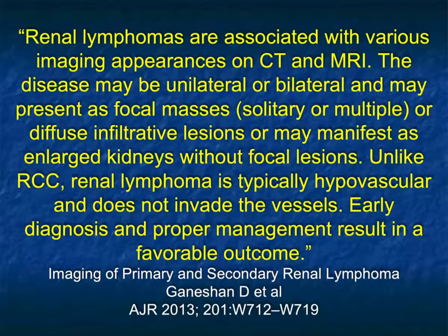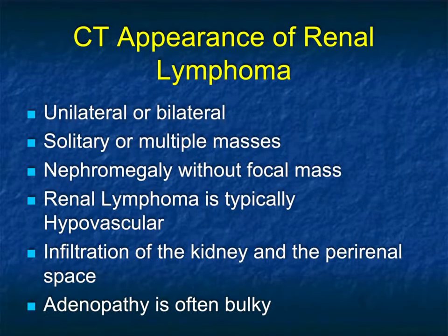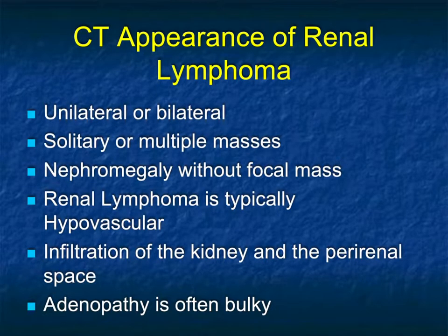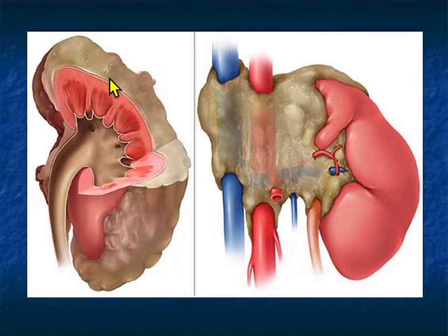The next tumor to discuss — best described as a great mimicker — is lymphoma. Kidney, adrenal, liver, and spleen are always a challenge because we often don't think about it. Unlike renal cell carcinoma, renal lymphoma is typically hypovascular and does not invade vessels. Early diagnosis and proper management result in a favorable outcome. Appearances include unilateral or bilateral involvement — more commonly bilateral — with solitary or multiple masses, nephromegaly without a focal mass, typically hypovascular lesions, perirenal or pararenal space involvement, and bulky adenopathy. Five major appearances: large solitary mass, multiple masses, infiltration, infiltration with perirenal space involvement, and bulky adenopathy.